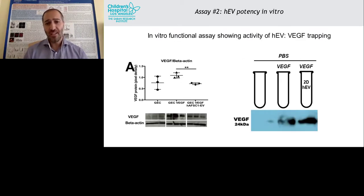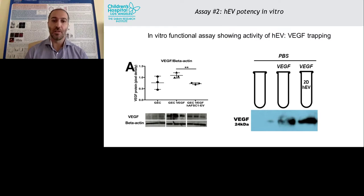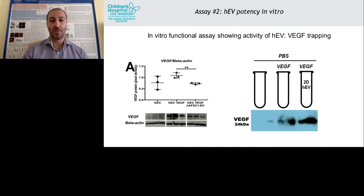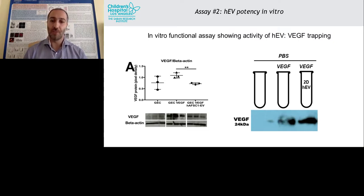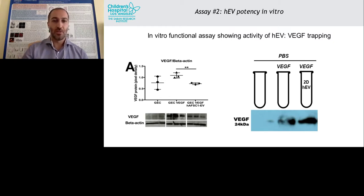Assay number two is the in vitro potency assay. Glomerular endothelial cells were cultured and treated with VEGF to mimic the conditions in Alport glomeruli, then human EVs were applied. Very similar to what mouse EVs did, we saw an amelioration — a decrease — of VEGF protein. In a subsequent experiment performed without the confounding factor of cells, we again observed a direct interaction between VEGF and the human EVs, confirming that the potency of human-derived EVs is similar, if not better, than the mouse-derived ones.